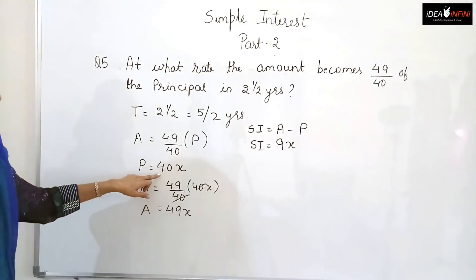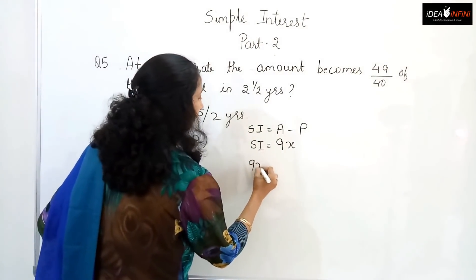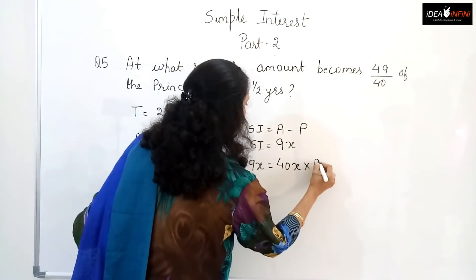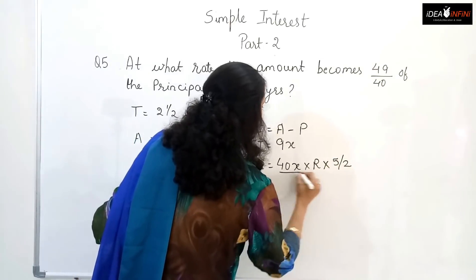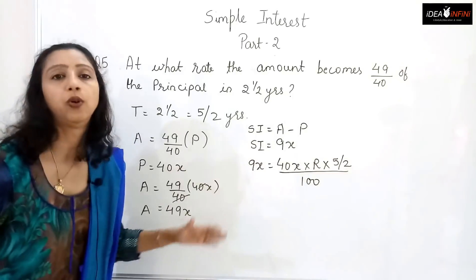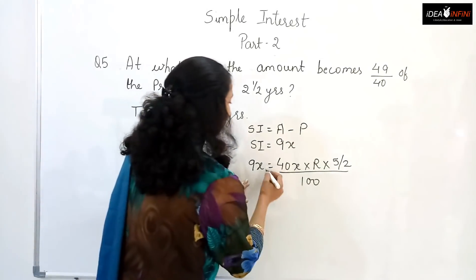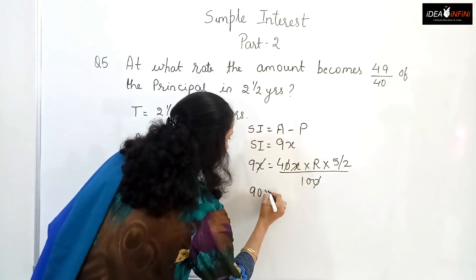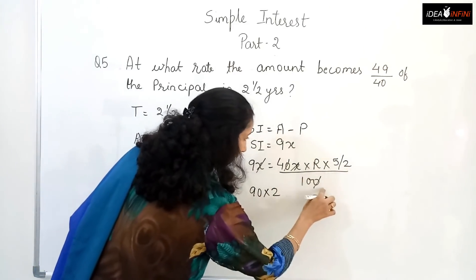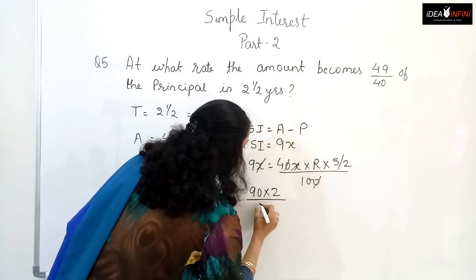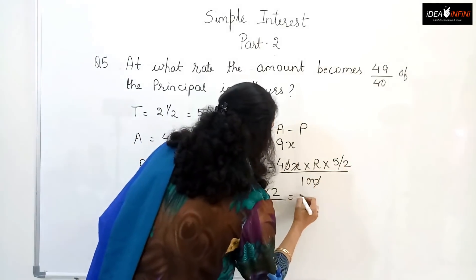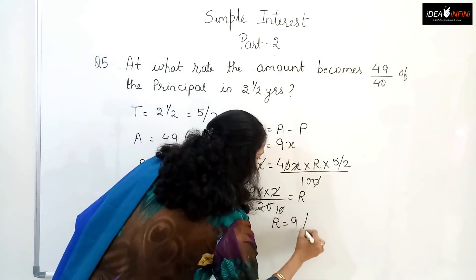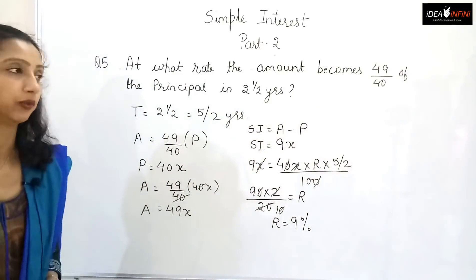Using SI = PRT/100: 9x = 40x × R × (5/2) / 100. The x cancels out. Solving: 9 = 40 × R × 5 / 200 = R. So R = 9%. The rate of interest at which the amount becomes 49/40 of the principal in two and a half years is 9% per annum.